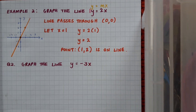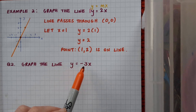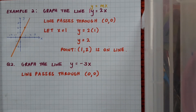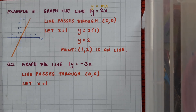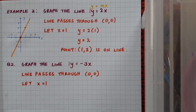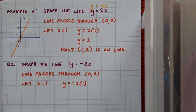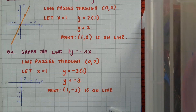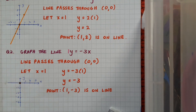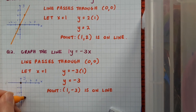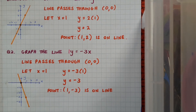Now a question for you: graph the line y equals minus 3x. Pause the video here while you do that, then play to see if you're correct. The format y equals mx tells me straight away this line goes through the point (0, 0). I want to get a second point, so I'll identify the coefficient of y, which is 1, and substitute that in for x. Letting x equal 1, y equals minus 3 times 1, which is y equals minus 3. So the point (1, −3) is on the line. I'll mark in the origin and (1, −3) — out to 1 and down to minus 3 — and join those to make the line y equals minus 3x.